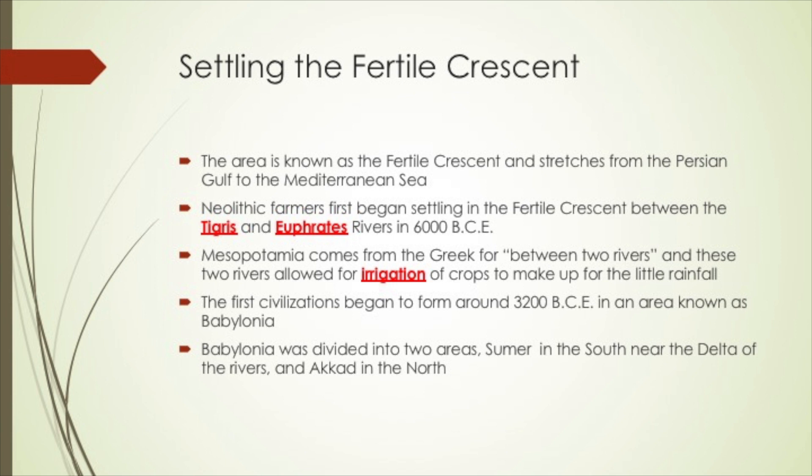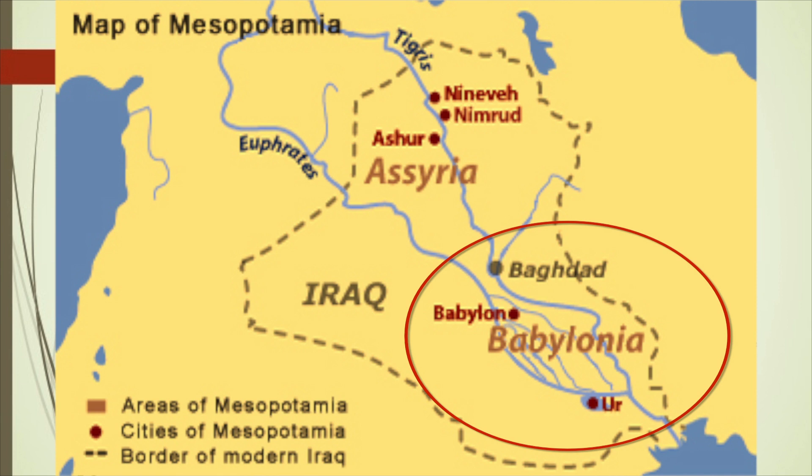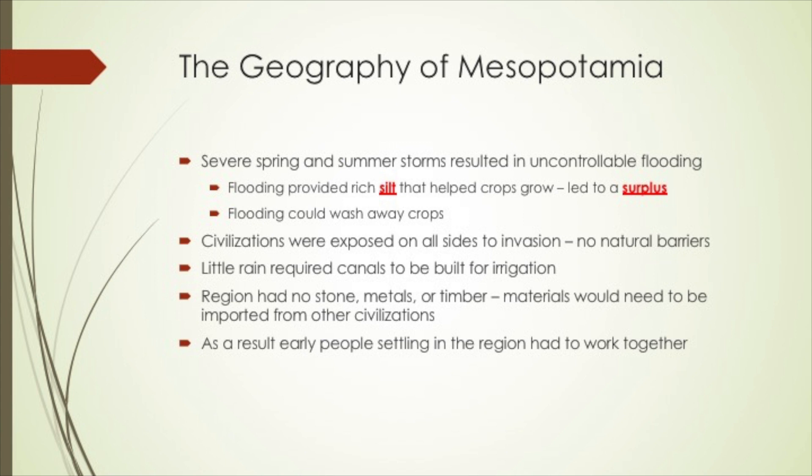Thanks to the system of irrigation, civilizations began to form around 3200 BCE in an area known as Babylonia. Babylonia was divided into two regions: Sumer in the south, near the delta of the rivers and the Persian Gulf, and Akkad in the north. These two areas became very important in early Mesopotamian civilizations.